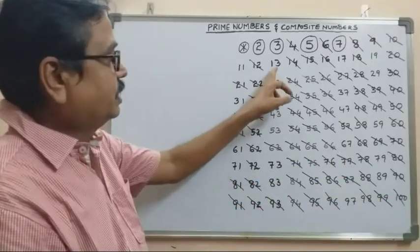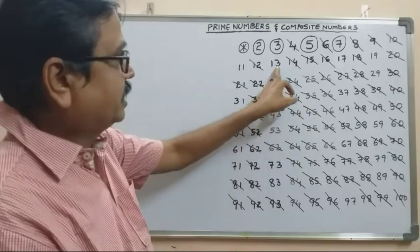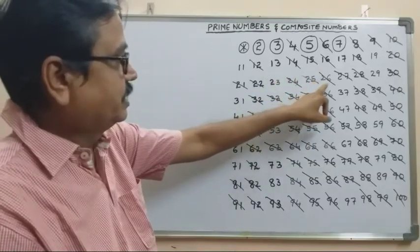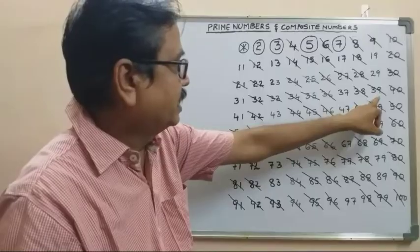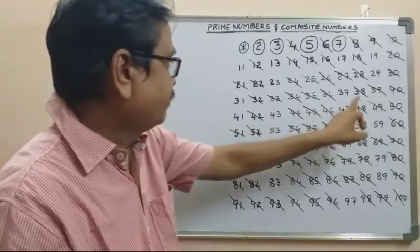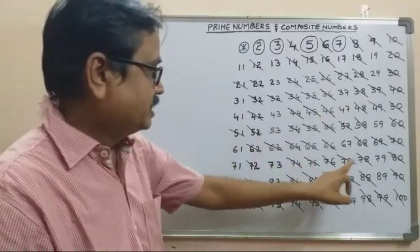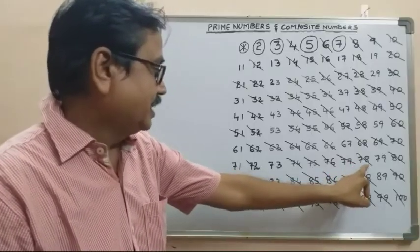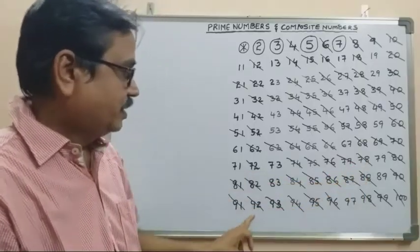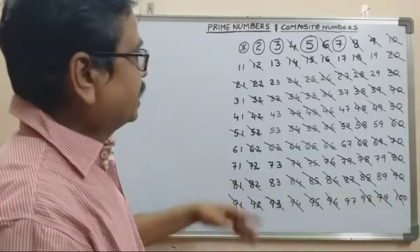Next, 13 table: multiples of 13 are 13, 26, 39, 52, 65, 78, 91. We cancel these from the table.